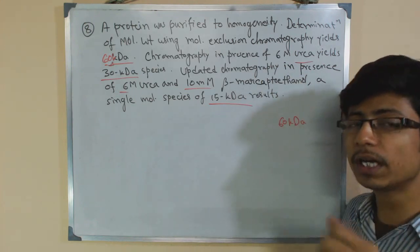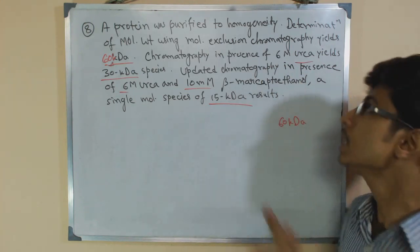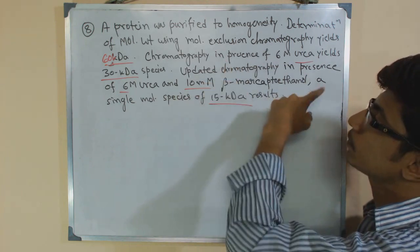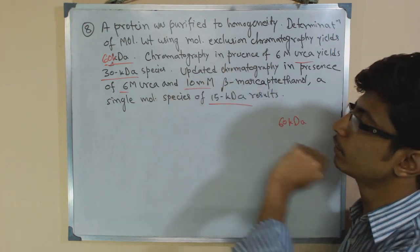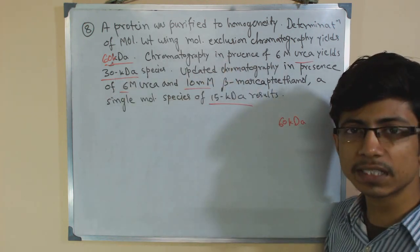6 molar urea is exactly the high quantity needed to break it. After chromatography in presence of 6 molar urea, we get a 30 KD species, and that is an important fact.